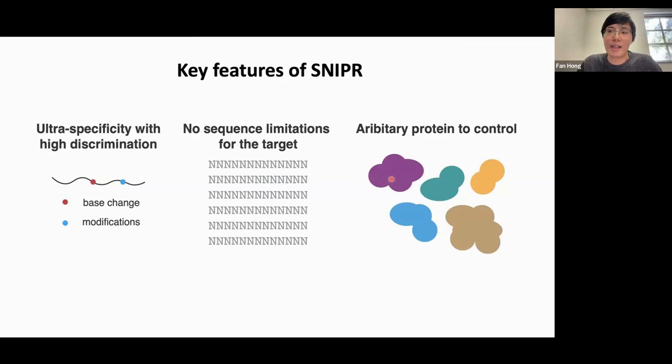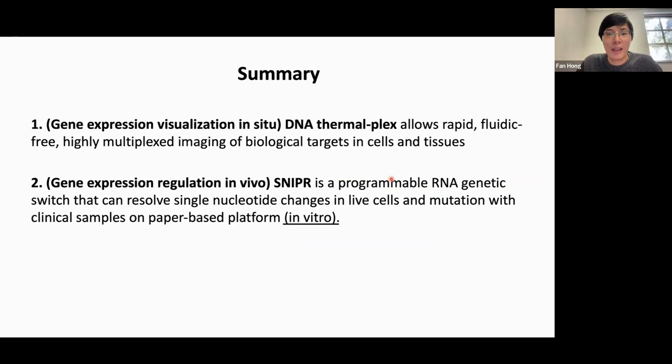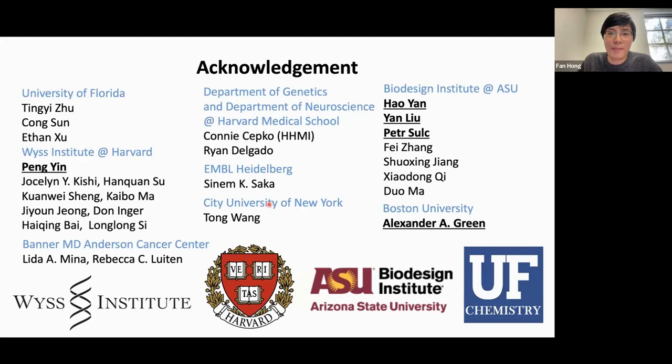The key feature of Sniper is that it can distinguish really tiny changes in RNA transcripts, either base changes or modifications. There is no sequence limitation theoretically if you do a good job with RNA folding prediction, and the downstream protein can be arbitrary for different applications. To summarize: DNA Thermoplex is an imaging tool with fluorescence microscopy allowing visualization of up to 15 RNAs or proteins, while Sniper allows identification of single nucleotide mutations and modifications. Thank you all, and I'm happy to take any questions.